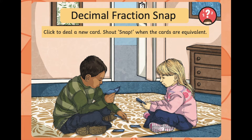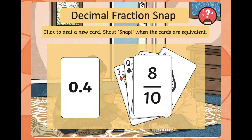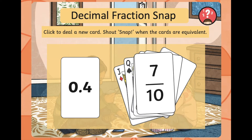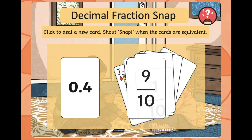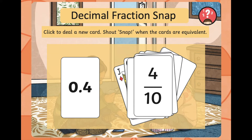We're going to start off by playing a little game — it's like snap. I'm going to deal a new card and you're going to have to shout snap when the cards are equivalent. The first equivalent fraction you're looking for is 0.4. Is it 8 tenths, 3 tenths, 7 tenths, 9 tenths, 1 tenth, 4 tenths? Hopefully some of you shouted snap there, because 0.4 is equivalent to 4 tenths.